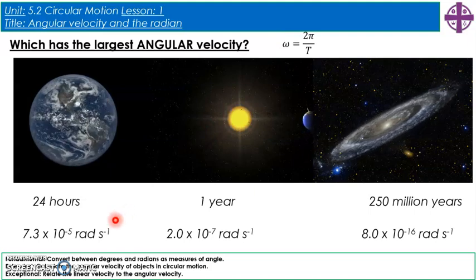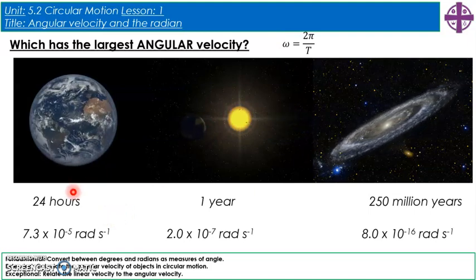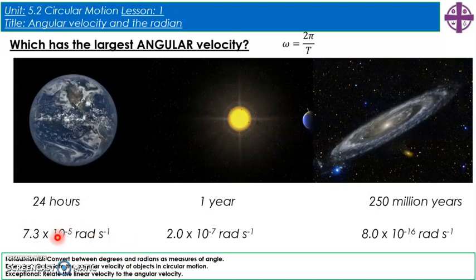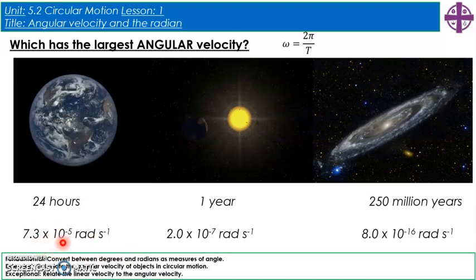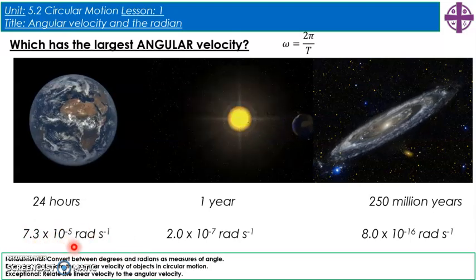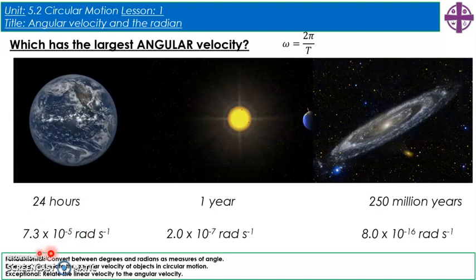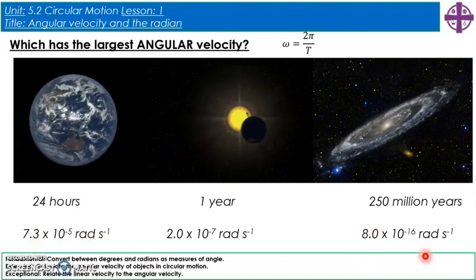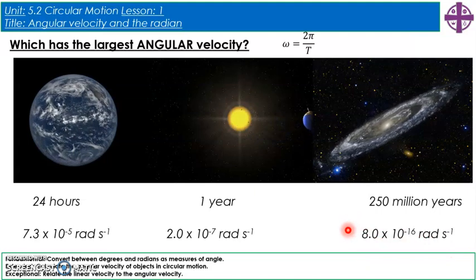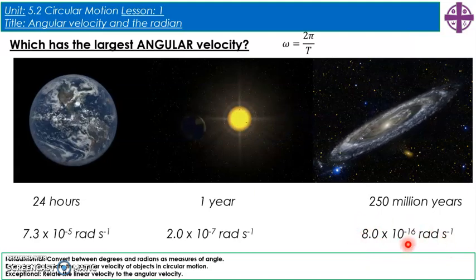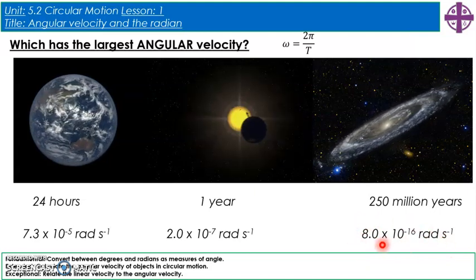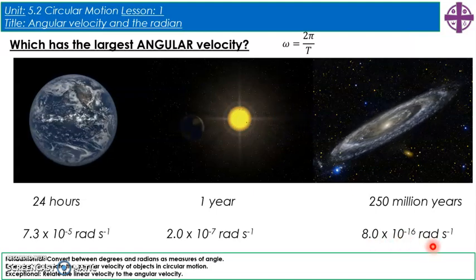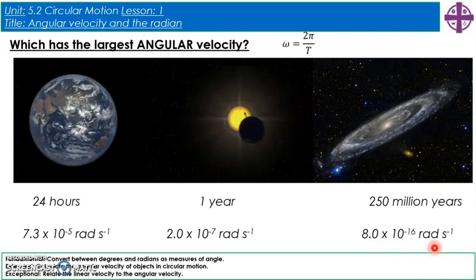The largest angular velocity by some distance is the earth's rotation: 7.3 × 10⁻⁵ radians per second. That is significantly higher than the solar system's orbit around the centre of the galaxy, which has a tiny angular velocity of only 8.0 × 10⁻¹⁶ radians per second.